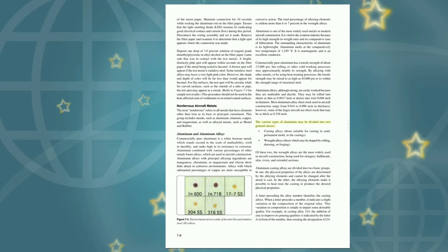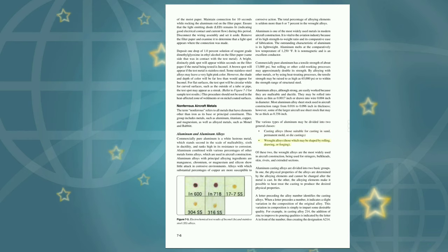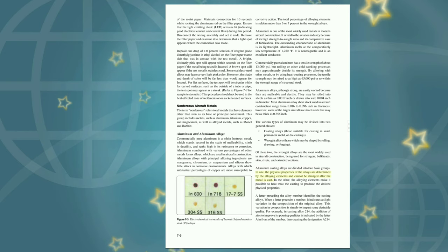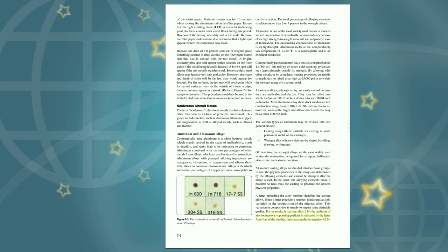The various types of aluminum may be divided into two general classes: casting alloys (suitable for casting in sand, permanent mold, or die castings) and wrought alloys (shaped by rolling, drawing, or forging). Wrought alloys are the most widely used in aircraft construction, being used for stringers, bulkheads, skin, rivets, and extruded sections. Aluminum casting alloys are divided into two basic groups: those whose physical properties are determined by the alloying elements and cannot be changed after casting, and those that can be heat-treated to produce desired physical properties. A letter preceding the alloy number identifies casting alloys and indicates a slight variation in composition. For example, in casting alloy 214, the addition of zinc to improve pouring qualities is indicated by the letter A in front of the number, creating the designation A214.